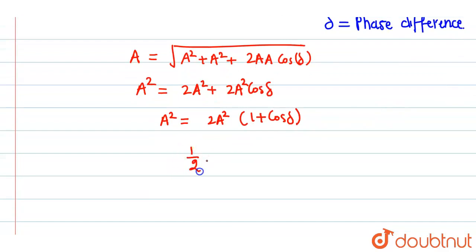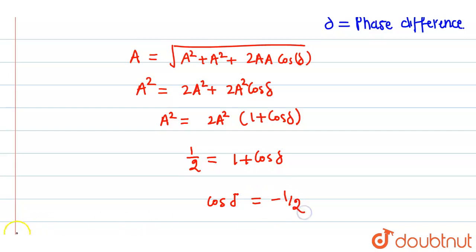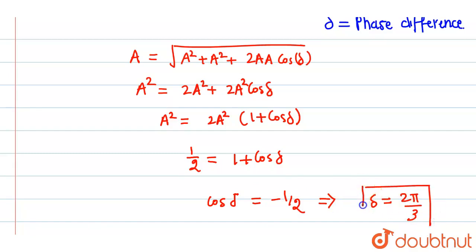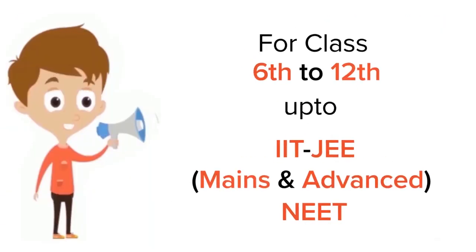So the value of cosδ comes out to be −1/2. For this to be possible, δ equals 2π/3. Hence, the phase difference between the two SHMs is 2π/3.